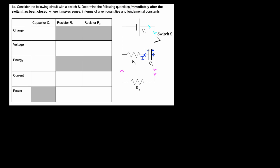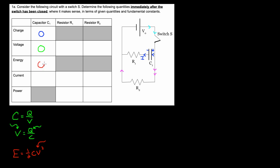Initially, you can act like the capacitor isn't even there — it's just connected by a wire. There's been no time for charge to build up, so the charge is zero. Remember the formula: capacitance is Q over V, and V equals Q over C. If you have no charge on a capacitor, you have no voltage. So the voltage across the capacitor is zero, and the energy — which is ½CV² — is also zero. Let's do a loop rule. The easiest loop has just a battery and one resistor, so the voltage across R2 has to be the entire V₀.